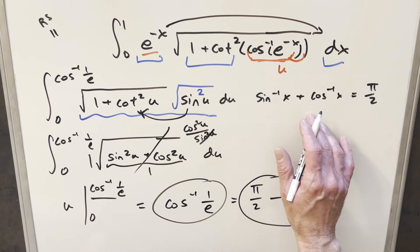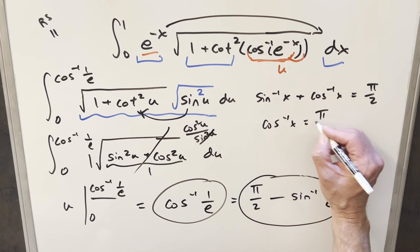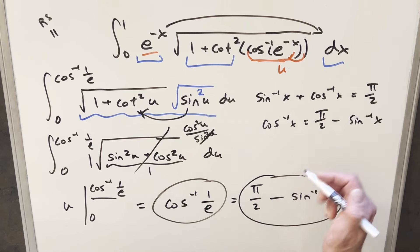So with this formula, if you just subtract arc sine on both sides, you get arc cosine is going to be equal to pi over two minus arc sine of x. And as you can see, this here is in the same format as what we have going on down here. We just have one over e instead of x.